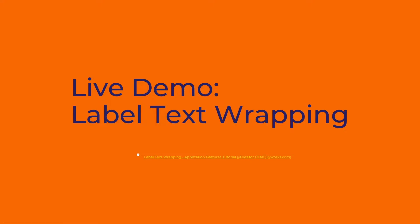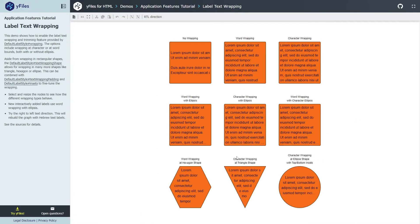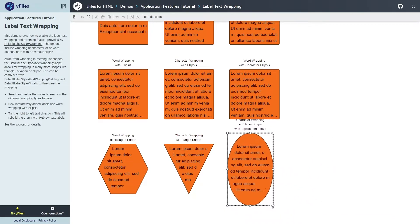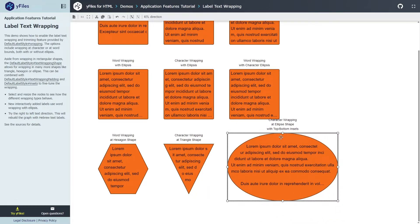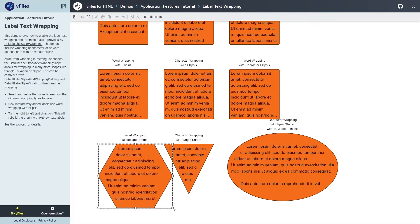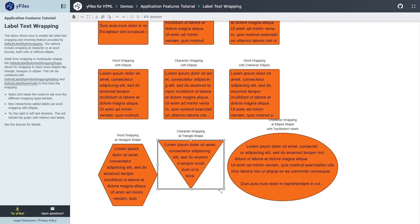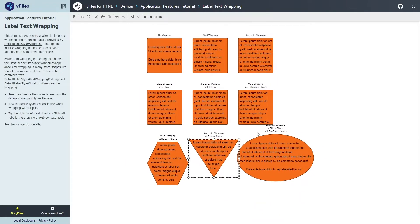Last but not least on styling is label text wrapping. When you have all these fancy new shapes and want to render labels on top of them, you probably don't want the labels to spill over the shape bounds. We came up with a text wrapping implementation that understands these shapes — you can configure cropping using shape information, specify insets, and choose whether words wrap at the word level, character level, with ellipses, or without. You can now render text inside these shapes without spilling over the boundaries, and you can also use this utility in your own custom shapes.